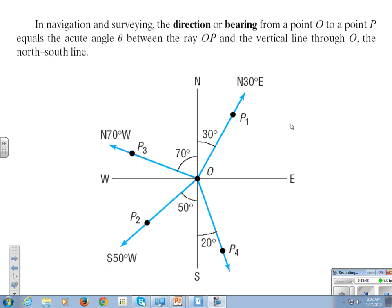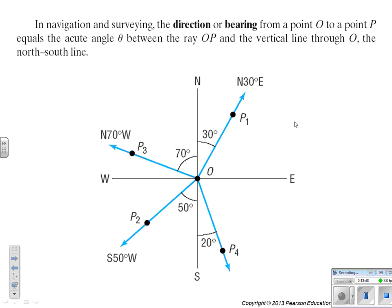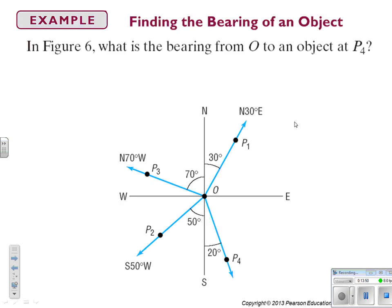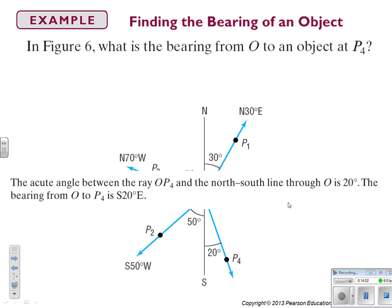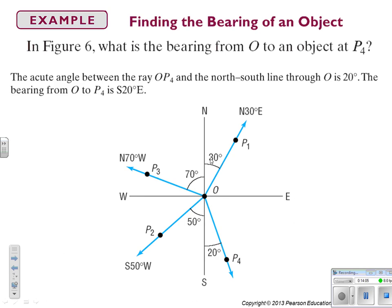Okay, so let's see how this rolls out. In figure six, what is the bearing O from object P4? So here's P4. We are south 20 degrees east. Boom. South 20 degrees east. Boom.